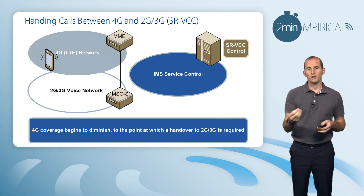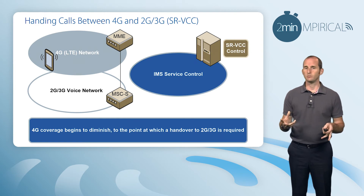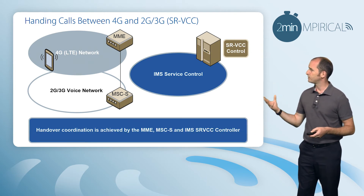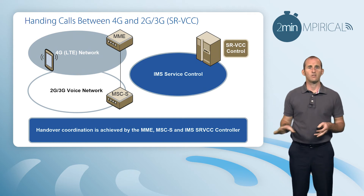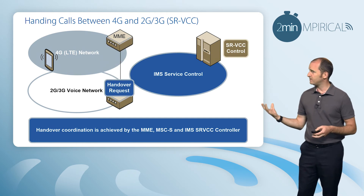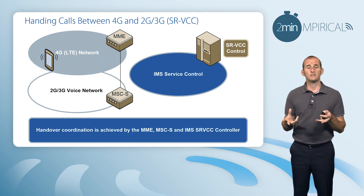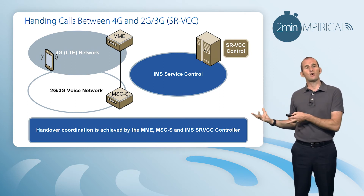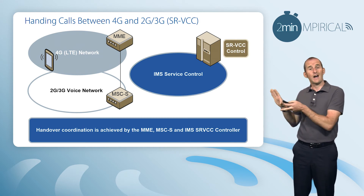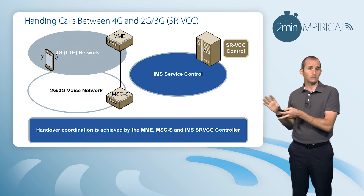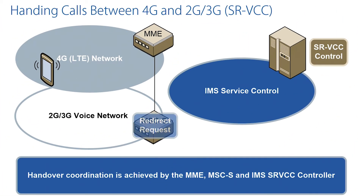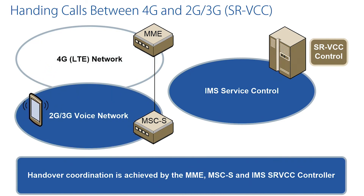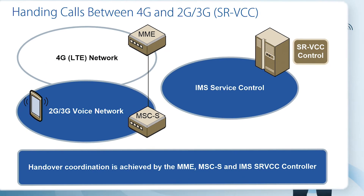But we're in a call, so this handover needs to be as seamless as possible. The handover is coordinated across our MME, our MSC server, and our SRVCC controller. The MME will tell the MSC server a handover request is required, and that MSC server will be triggered into establishing resources in the 2G or 3G network, but also inform the IMS — and in particular the SRVCC controller — that a redirection of voice needs to take place.